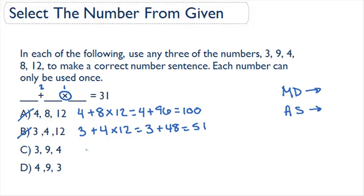That's 31. Our third answer would be 3 plus 9 times 4, which would give us 9 times 4 is 36, so we would have 3 plus 36, which equals 39. Again, not 31.